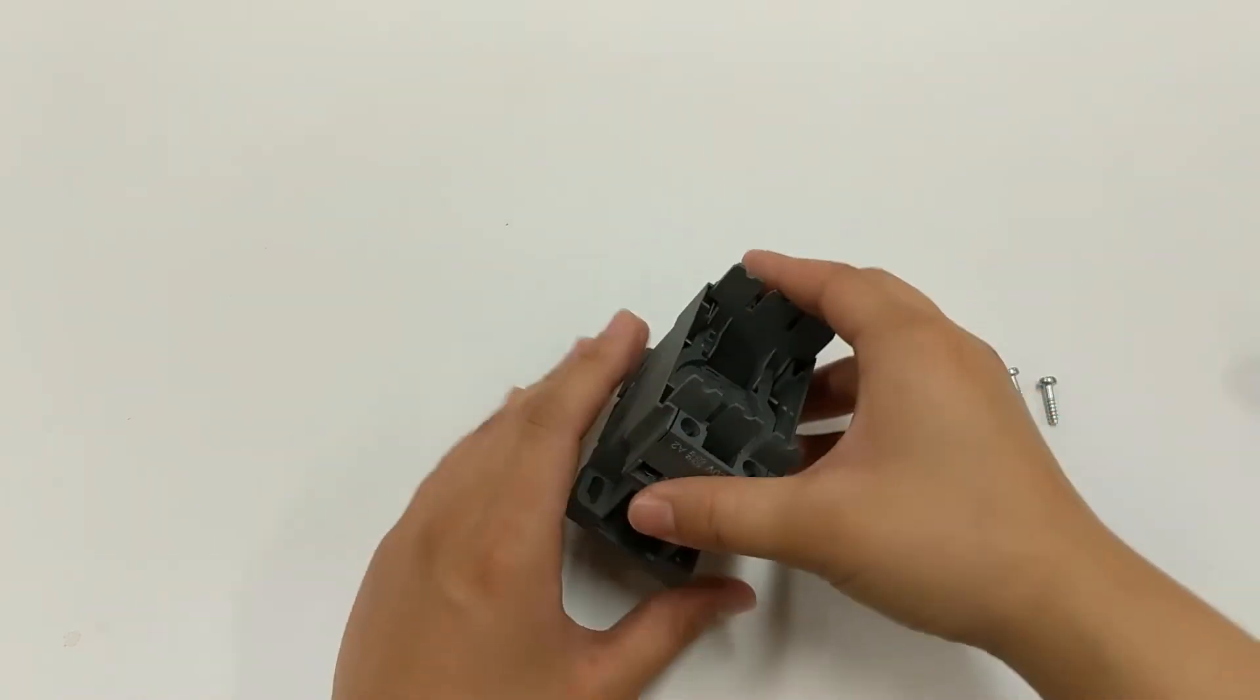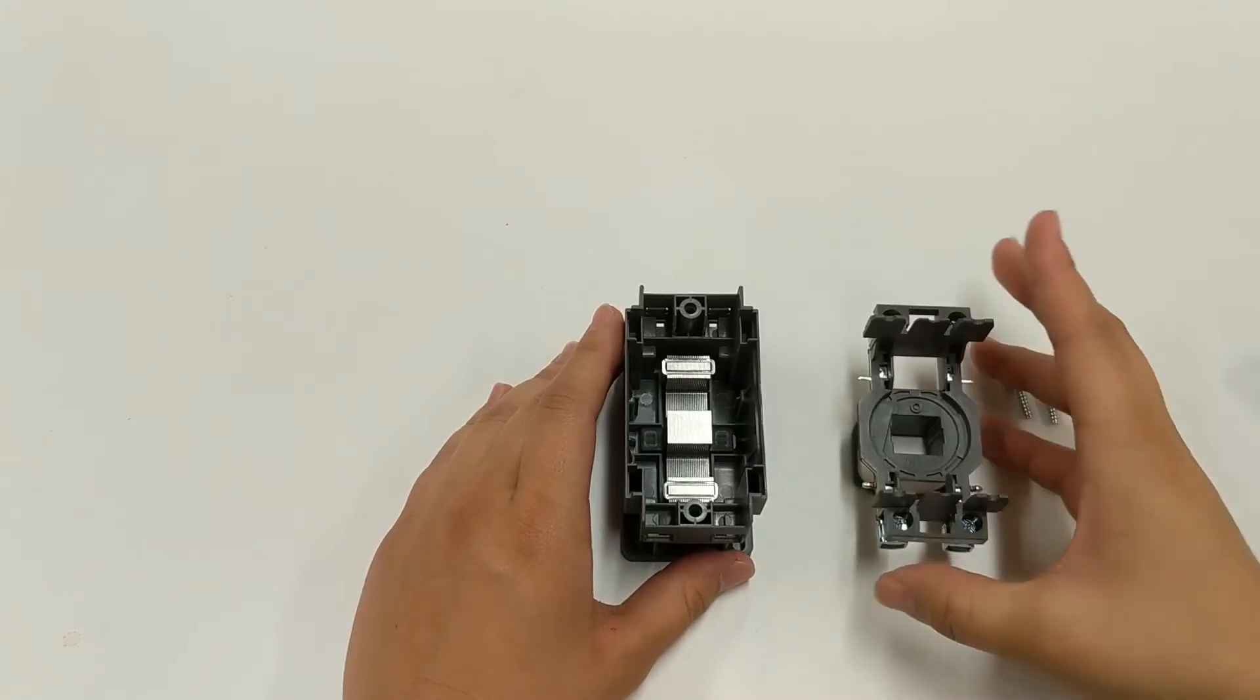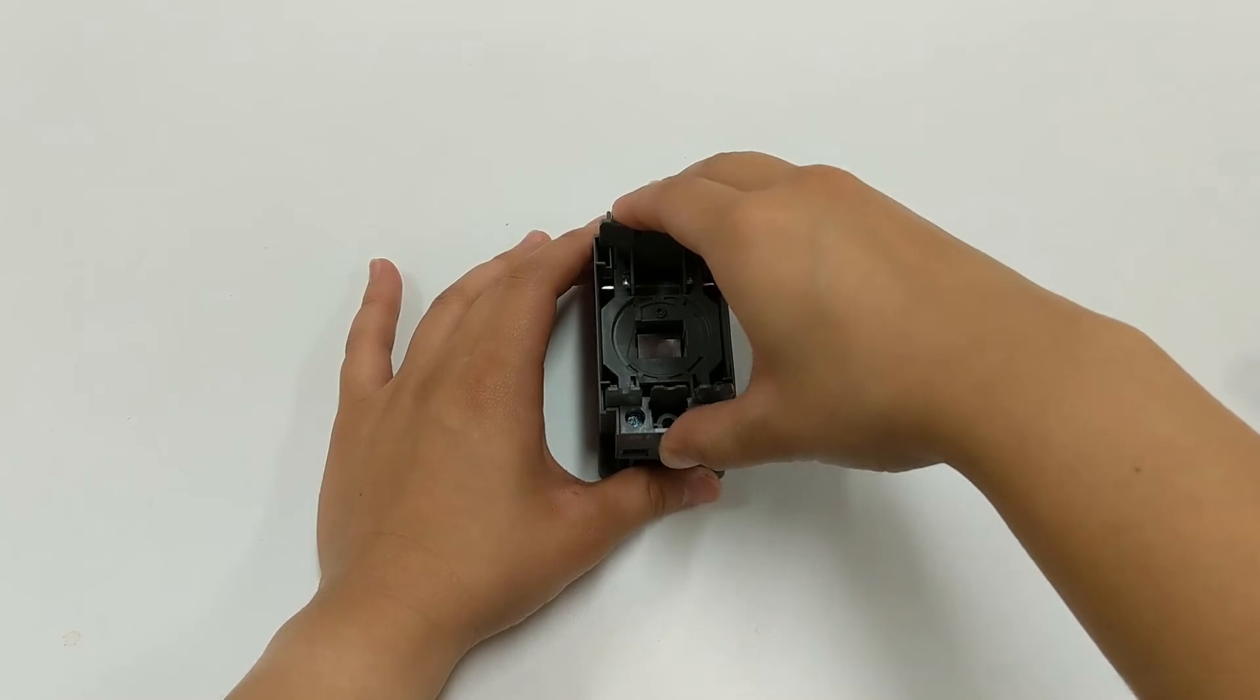Then remove the coil by pulling up on both sets of A1 and A2 terminals. Install the new coil and place the spring back into the contactor with the larger end down.